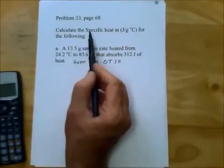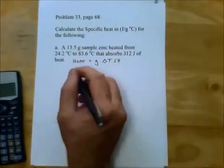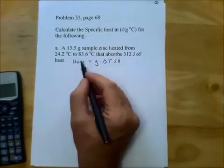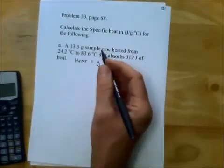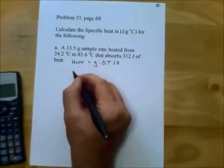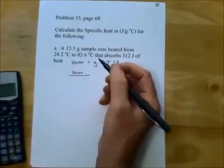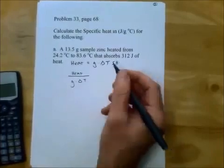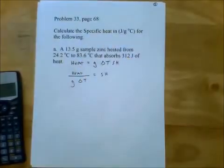Now we are looking for the specific heat. So that should tell us right off the bat to go ahead and solve for specific heat. If we take grams delta T and divide both sides by grams delta T, we'll end up with heat divided by grams delta T is equal to the specific heat, which is what we're looking for.